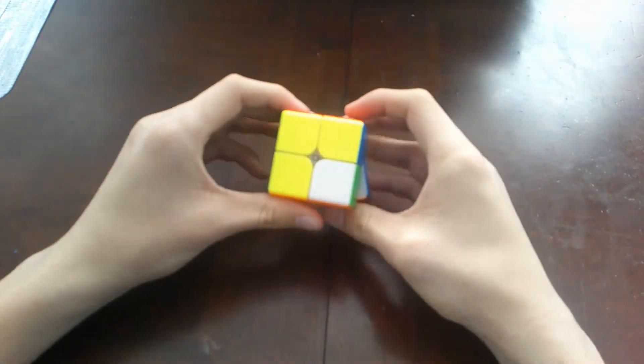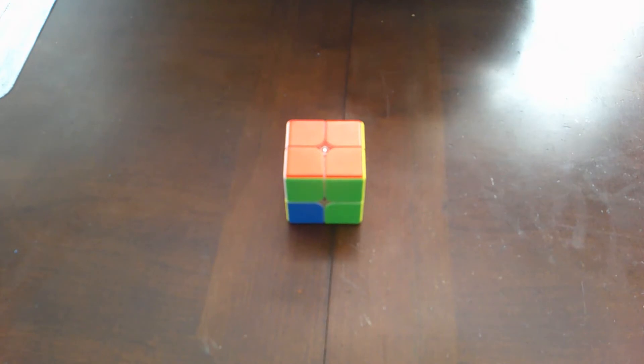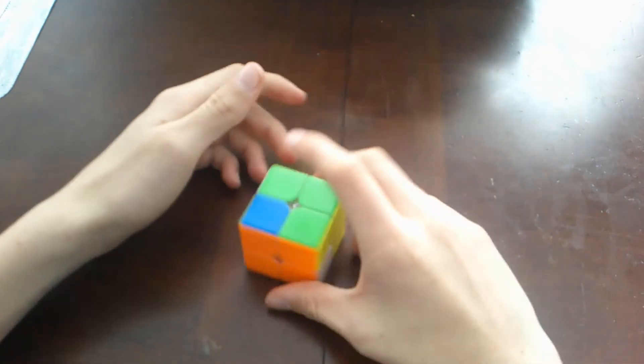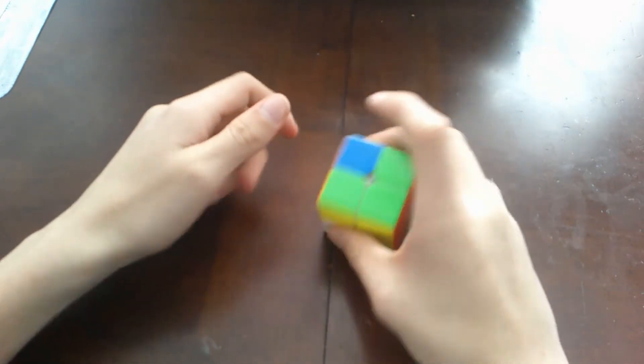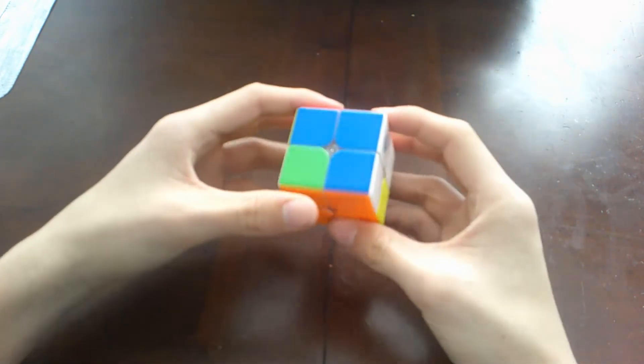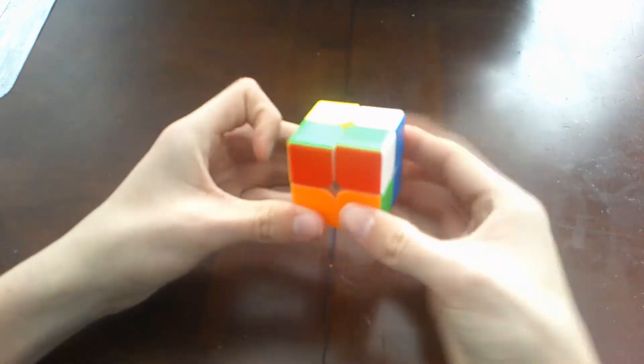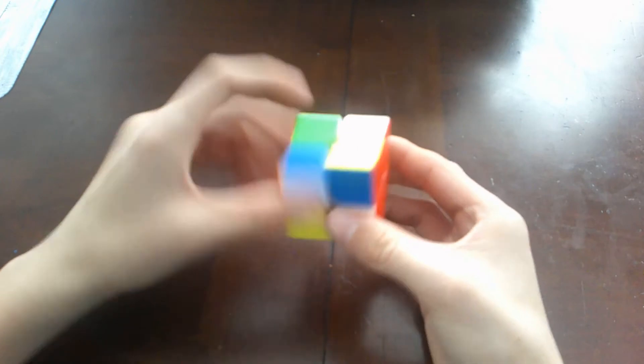And then this should solve. And then I see I have 2x2 Ortega. I call it 2x2 parity, but I found out this is 2x2 Ortega. So as you can see, how you finish that, you just want to do that same algorithm as you would to finish the cube.